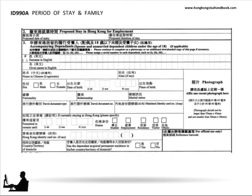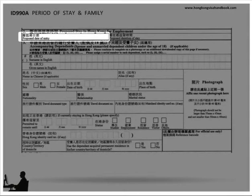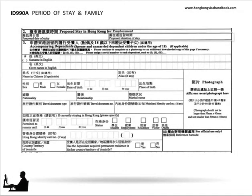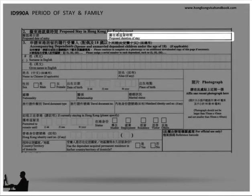For part 2 of the form, which covers the proposed stay in Hong Kong for employment, the proposed date of entry is best demarcated as being at least one month hence, but ideally three to four months, in order to give the Hong Kong Immigration Department the time they need to finalise the visa consideration processes. For the proposed duration of stay, if you've got no fixed time for the future, you can simply state indefinite, at your discretion.